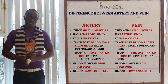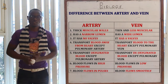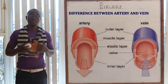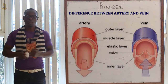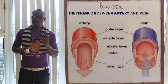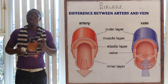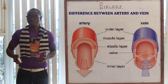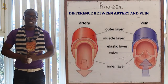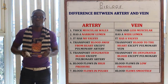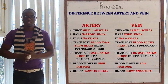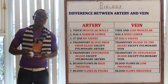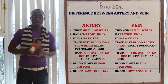Now let's look at the differences between arteries and veins. Arteries have a thick muscular wall while veins have a thin, less muscular wall. Arteries have a very narrow lumen compared to veins which have a wide lumen. Arteries don't have valves, while veins have valves at different intervals to prevent the back flow of blood. Arteries transport blood away from the heart, while veins bring blood back to the heart.